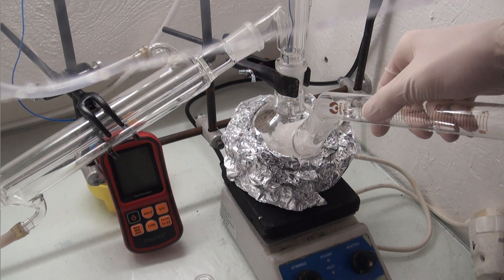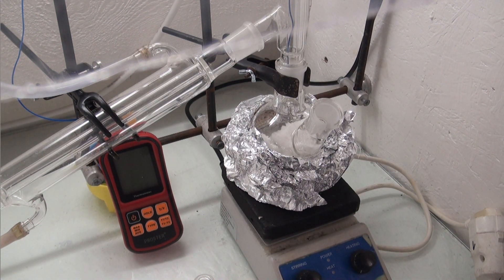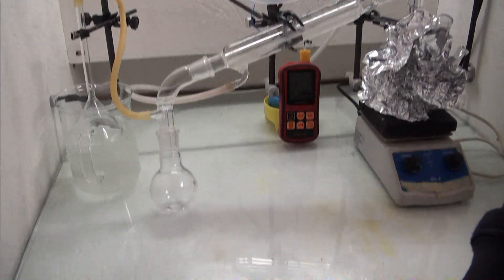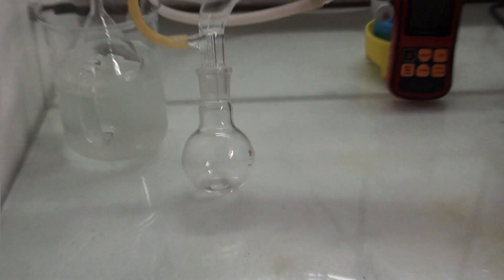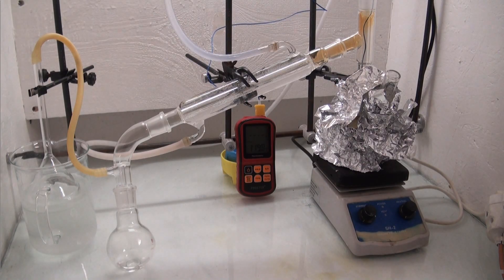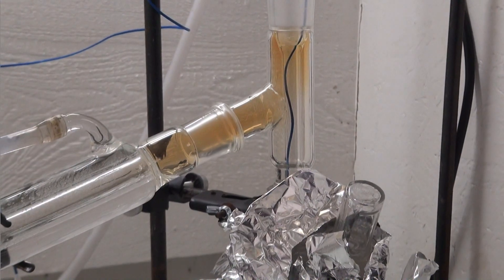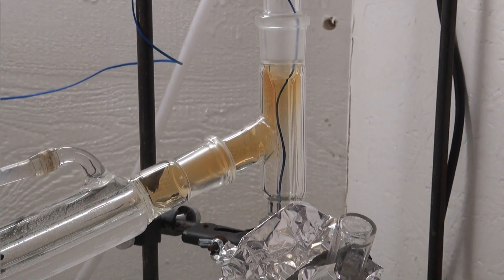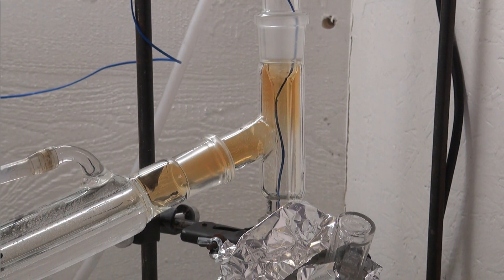There was no reaction happening right away, so heating was started. After about 30 minutes, the first distillate started condensing at about 100°C. Over the next 30 minutes, the temperature slowly rose to 220°C and stayed there. At the same time, nitrogen dioxide started evolving. The distillate coming over was looking more and more yellow, which is a good sign.